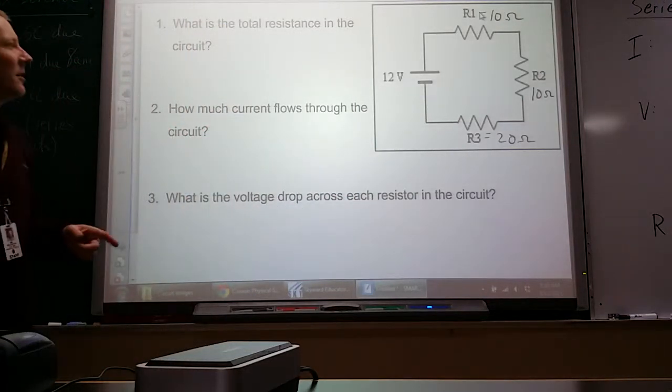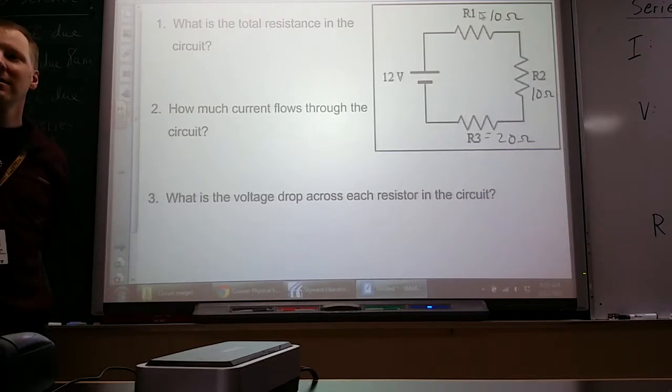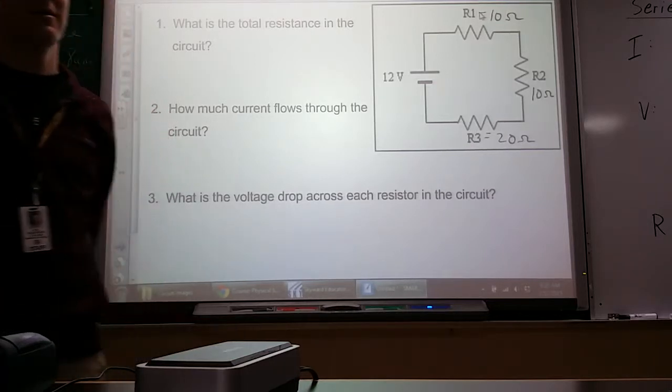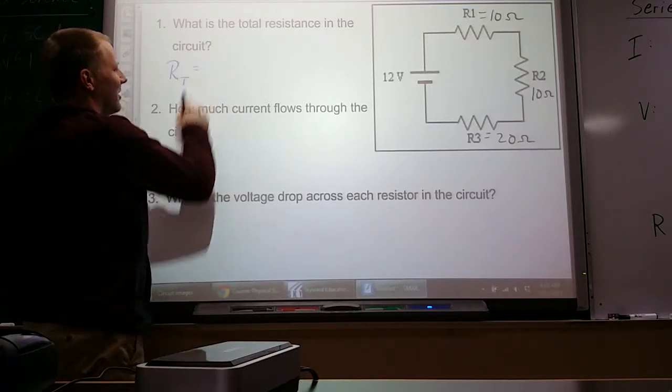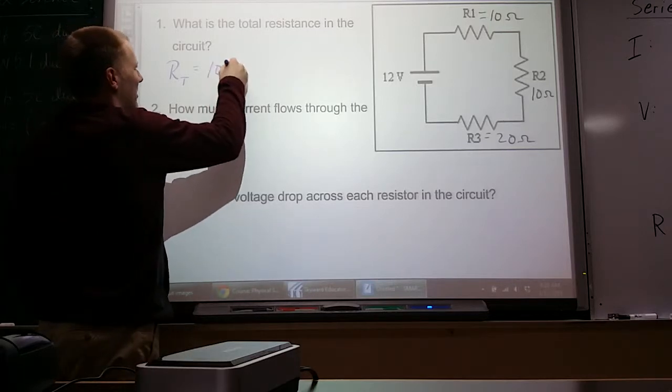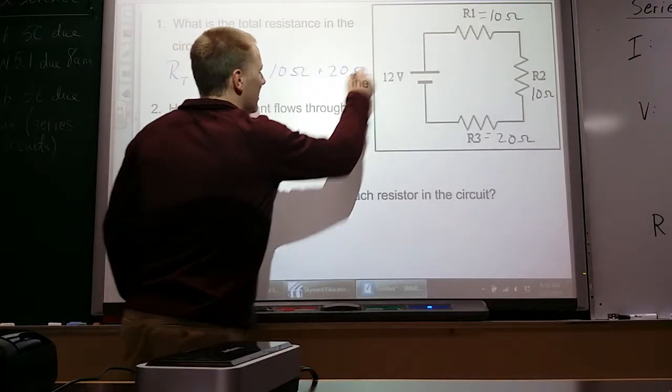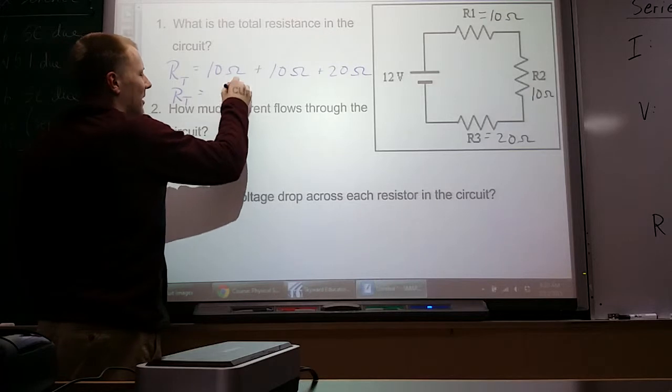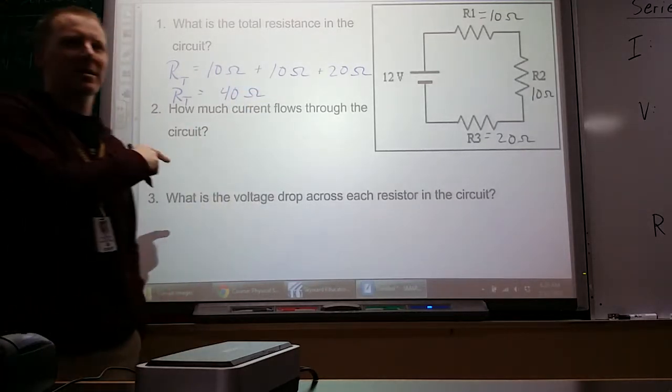First question, what do we know about the total resistance in this circuit? In a series circuit. Yeah, Justin? 40 ohms. 40 ohms, how do you know? I added 10 ohms. Right. Total resistance is going to equal the sum of all those resistors, so 10 ohms plus 10 ohms plus 20 ohms. So the total resistance is 40 ohms. When the battery looks out and senses the rest of the circuit, that's what it senses, 40 ohms.